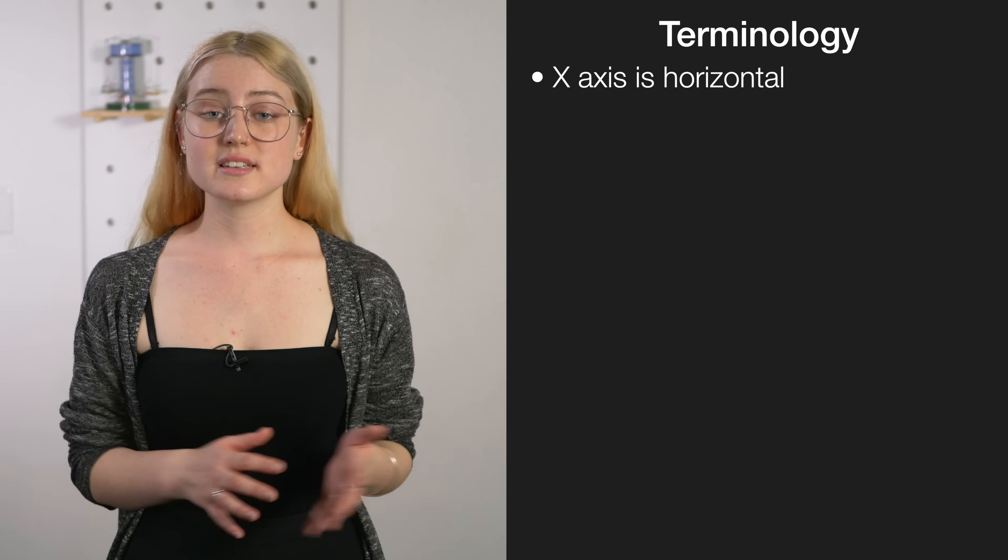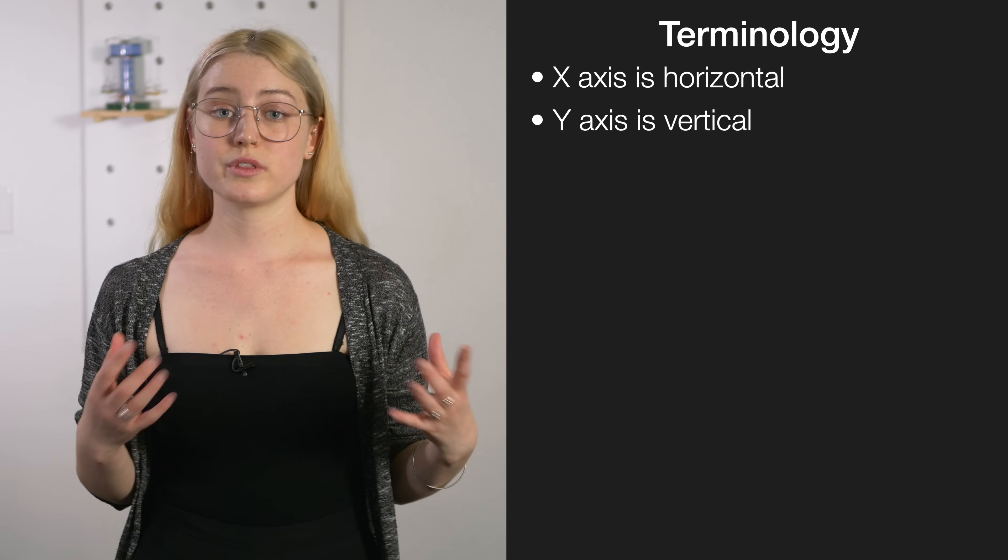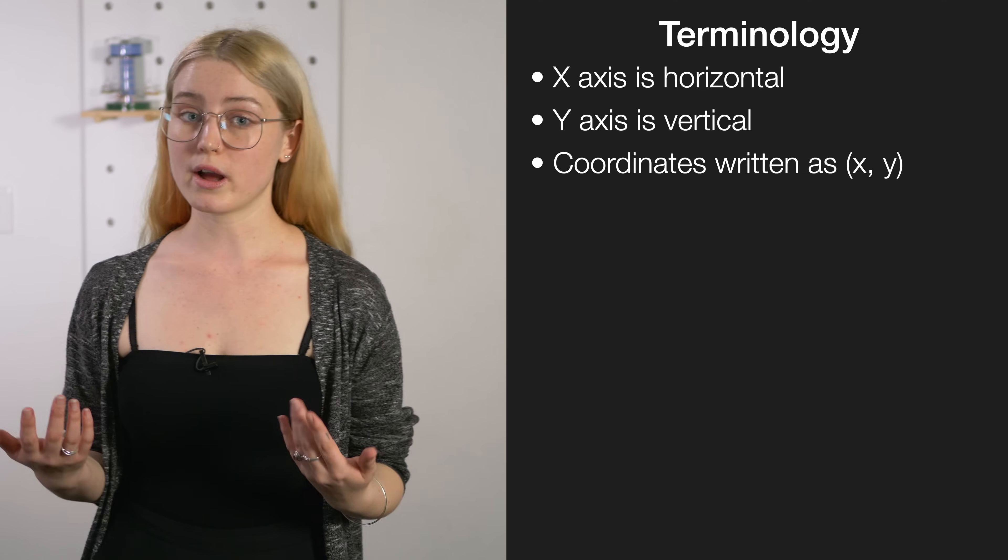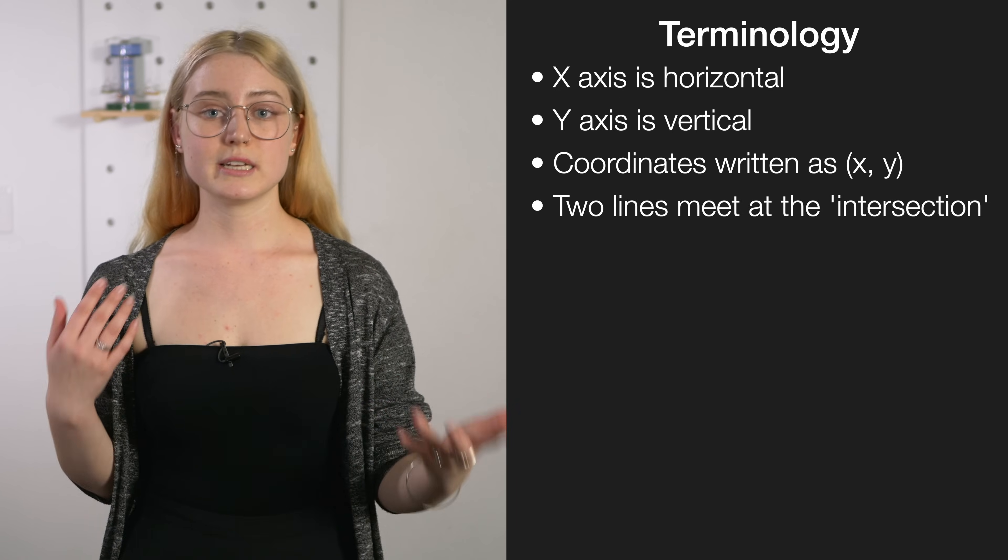So our first strategy for success for the standard is using the appropriate terms in your explanations. This will also help you understand exactly what is going on in the graphs that you have to analyze. So with the basics, your x-axis is horizontal and your y-axis is vertical and your coordinates are always written within brackets beginning with your x and then your y coordinate. And when you're comparing two lines where they meet is called the intersection.